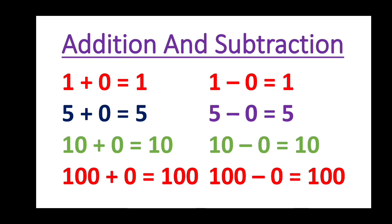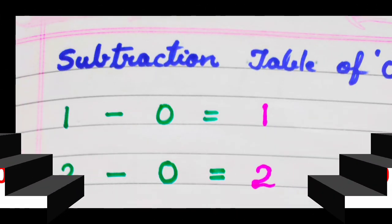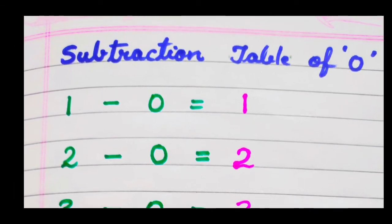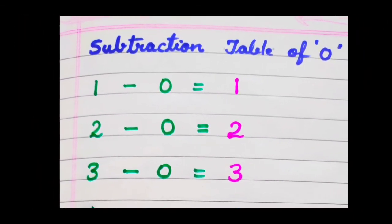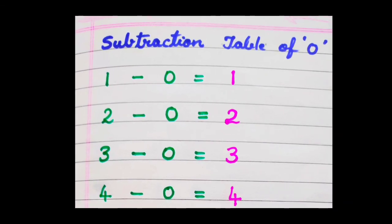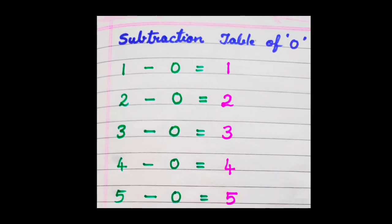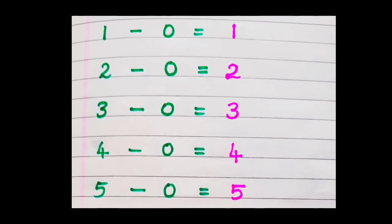Okay? Here, look at the sign — this sign is called plus. Plus sign is for addition. Look at this sign — this is minus sign. Minus sign is for subtraction. Okay children, so watch this video again and again. Learn the subtraction table of 0 by heart. We will see in the next video the subtraction table of 1. Till that time, bye-bye.